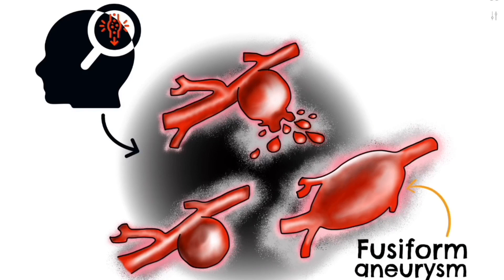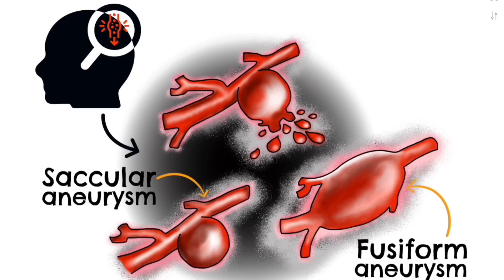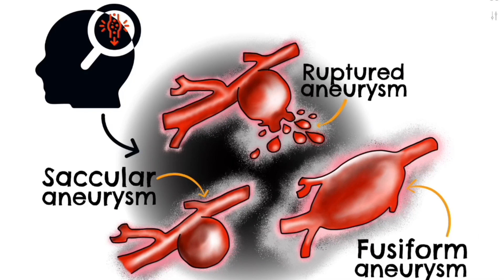A saccular aneurysm is the most common type and is often referred to as a berry aneurysm. It is an outpouching on one side of the vessel wall, and it is the most likely to rupture. A fusiform aneurysm is a dilatation around the complete circumference of a vessel. A microaneurysm is an aneurysm of a small vessel, most often affecting the lenticulostriate arteries supplying the basal ganglia.